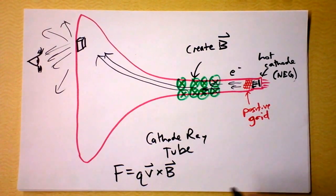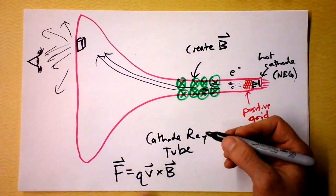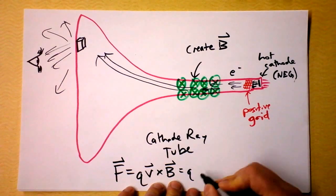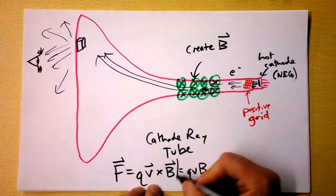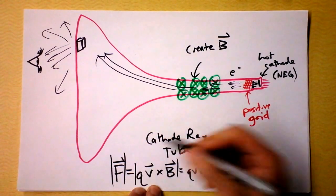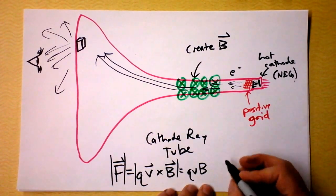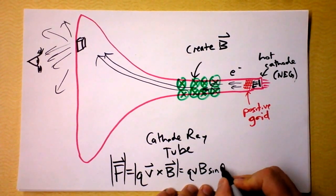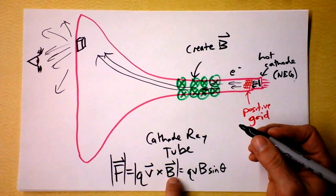So this is a force, and it's a cross product, and it's Q times V times B. It's magnitude, rather. If we're looking for the magnitude of this force, it would be Q times V times B times the sine of the angle between V and B.